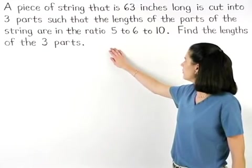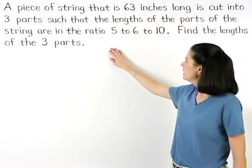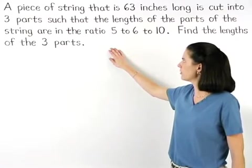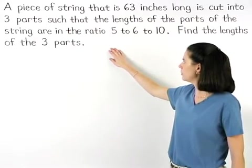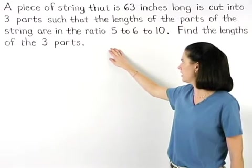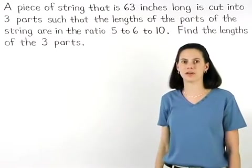A piece of string that is 63 inches long is cut into three parts such that the lengths of the parts of the string are in the ratio 5 to 6 to 10. Find the lengths of the three parts.